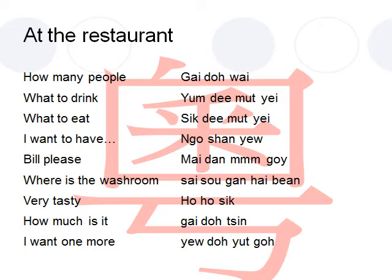幾多位. In this case, 幾多 means how many — 幾 means how, and 多 means many. 位 in Cantonese doesn't mean people; it actually means seat. So basically it translates to how many seats. So how many people in Cantonese is 幾多位.